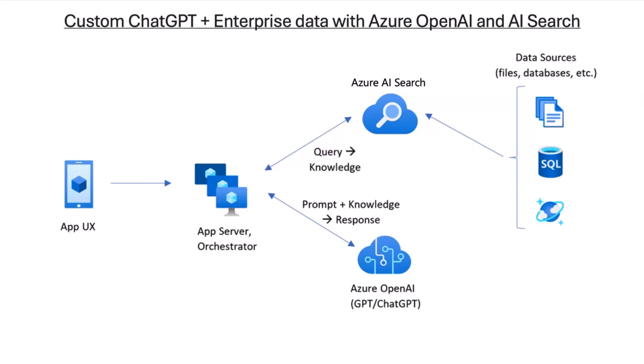The benefit of integrating with Azure AI Search is you can bring multiple different data sources. The data source can be unstructured, structured, or any type of data — files, documents, images, videos, and so on. So it can be a very diverse set of data and multiple datasets.